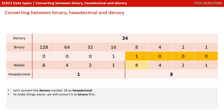We then take the next nibble, and again we have a 1 in the 8 column, so we have 8. The denary number 24 in hexadecimal is 1 8. That's important — it's not 18, it's 1 8. It's important to note that although hexadecimal has letters available to it, not every denary number will convert into a hexadecimal number that contains letters.